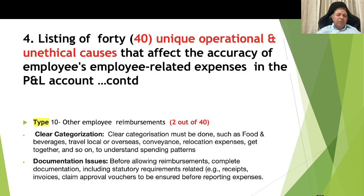Type 10, other employee reimbursements: these need to be clearly categorized such as food and beverages, travel (local or overseas), convenience, and relocation expenses, and must not be clubbed together in order to understand spending patterns. Documentation issues: before allowing reimbursement, complete documentation including statutory requirements — for example, receipts, invoices, and claim approval vouchers — must be ensured before reporting the expenses.